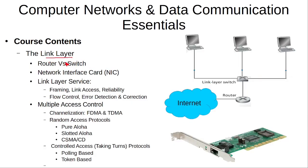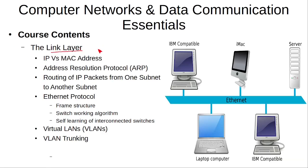We will then move to the link layer, where we will discuss the difference between a switch and a router, what a network interface card is and how it is used, what services are provided by the link layer, and what multiple access protocols are defined at the link layer — whether they are channelization protocols, random access protocols, or controlled access protocols. We will also discuss the difference between an IP address and a MAC address, and how the Address Resolution Protocol (ARP) works.